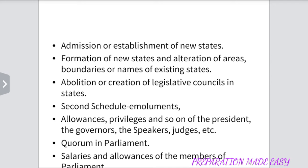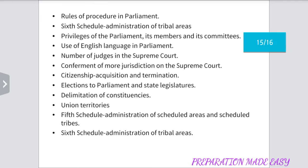Further provisions amendable by simple majority include: the Second Schedule — Allowances, Privileges and so on of the President, Governor, Speaker, Judge, etc.; Quorum in the Parliament; Salaries and allowances of members of the Parliament; Rules of Procedure in the Parliament; Sixth Schedule; Privileges of the Parliament, its members and its committees; Use of English language in the Parliament; Number of Judges in the Supreme Court and conferment of more jurisdiction on the Supreme Court; Citizenship — Acquisition and termination; Elections to Parliament and State Legislature; Delimitation of Constituencies; Union Territories; Fifth Schedule; and Sixth Schedule.